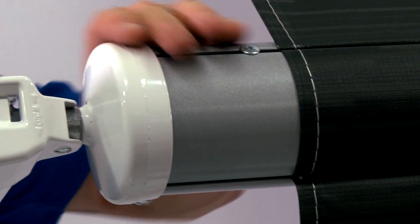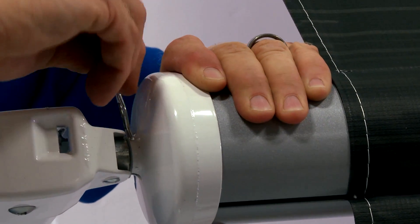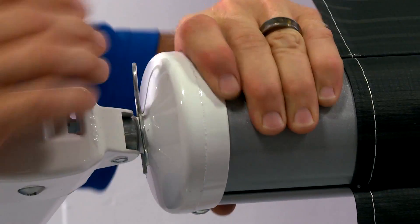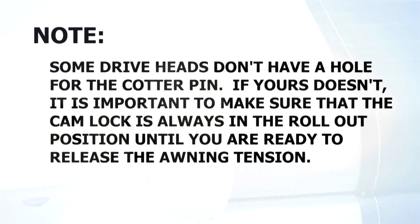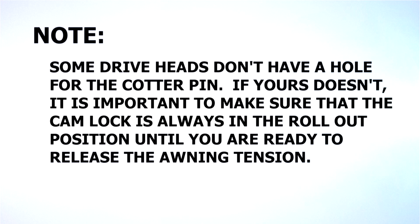Next, on the idler leg, locate a small hole. Push a cotter pin through this hole. This ensures that the tension on the roll tube will always be locked during the installation. Some drive heads don't have a hole for the cotter pin. If yours doesn't, it is important to make sure that the cam lock is always in the roll-out position until you are ready to release the awning tension.